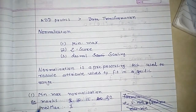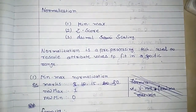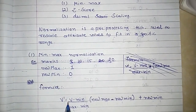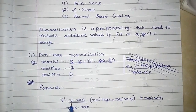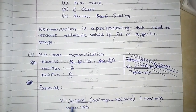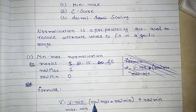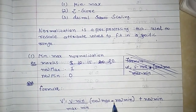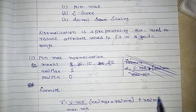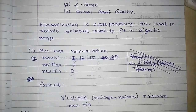First, let's discuss min-max normalization. The formula for that is: V' = ((V - min) / (max - min)) × (new_max - new_min) + new_min.